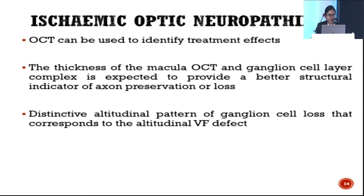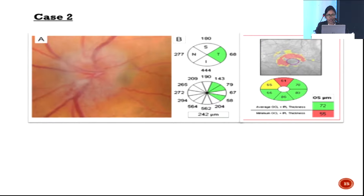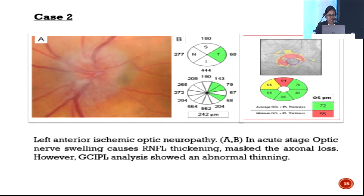Regarding ischemic optic neuropathy, OCT can identify treatment effects. Macular OCT and ganglion cell layer complex thickness provide a better structural indicator of axonal preservation or loss, and can corroborate altitudinal visual field defects seen in ischemic optic neuropathy. In the acute stage, optic nerve swelling causes RNFL thickening, which masks axonal loss.